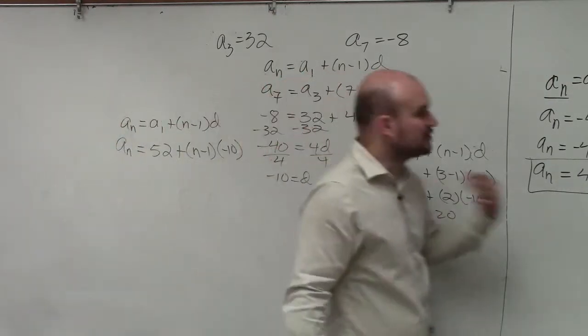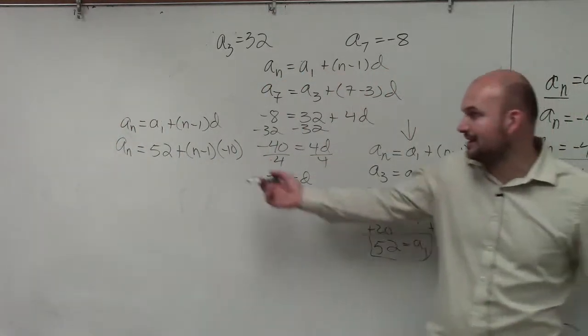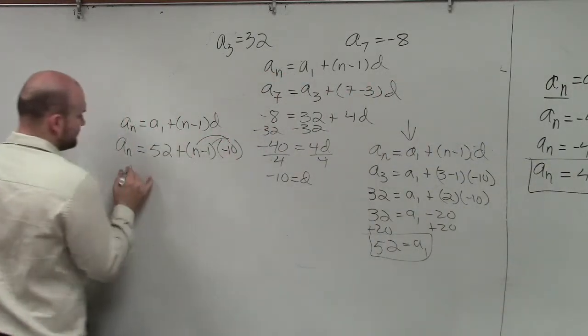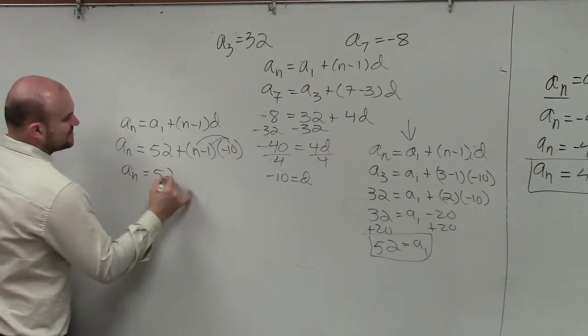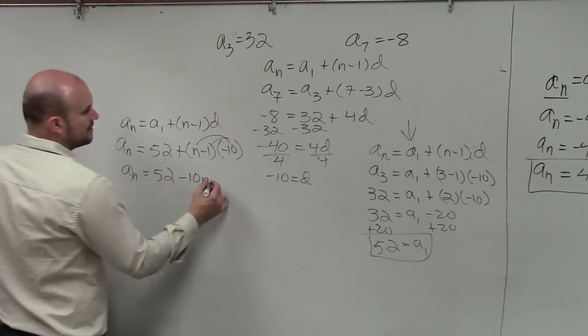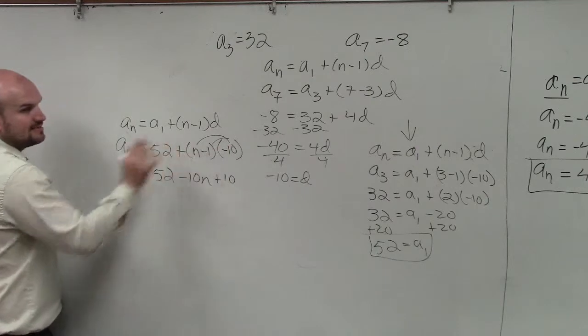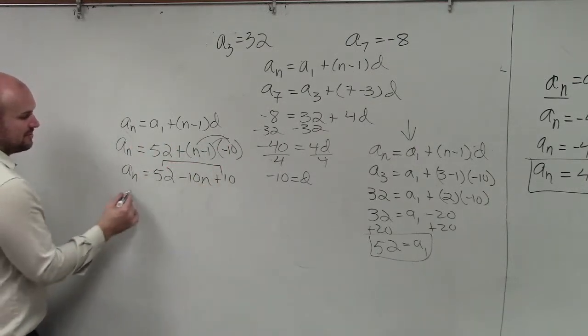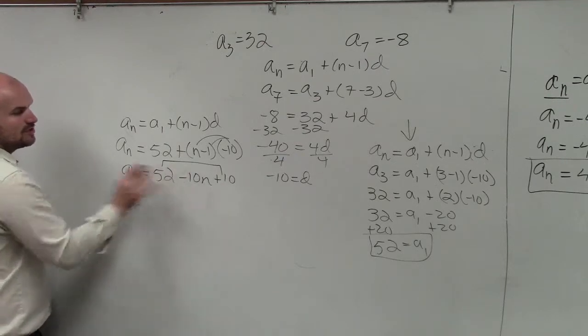However, as I mentioned, ladies and gentlemen, you're going to have to simplify. You're not going to have an answer on a test that's going to look like this. So we're going to apply the distributive property. a sub n equals 52 minus 10, negative 10n plus 10, because negative 10 times negative 1 is positive 10. Then, I can combine these, because those are two numbers, and I'll write my term with the variable first.